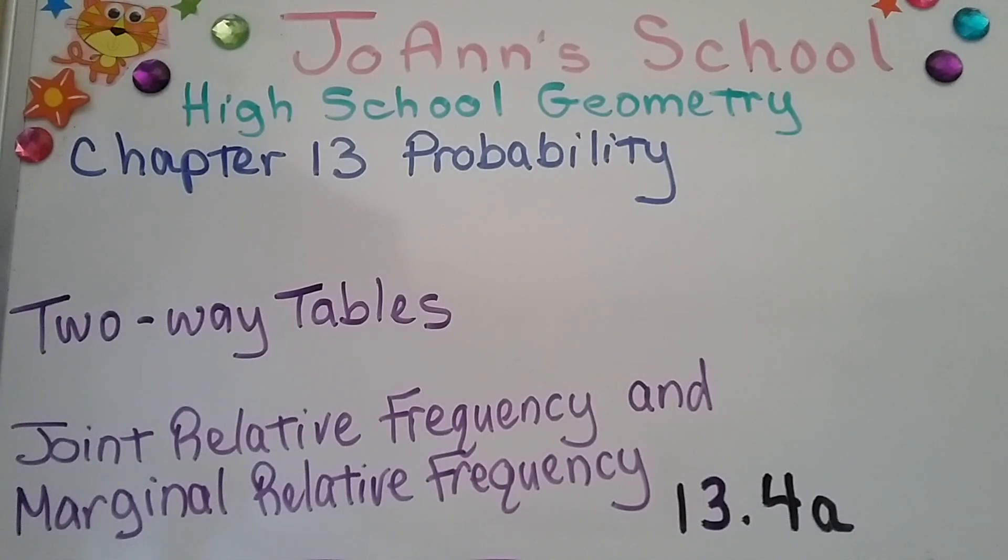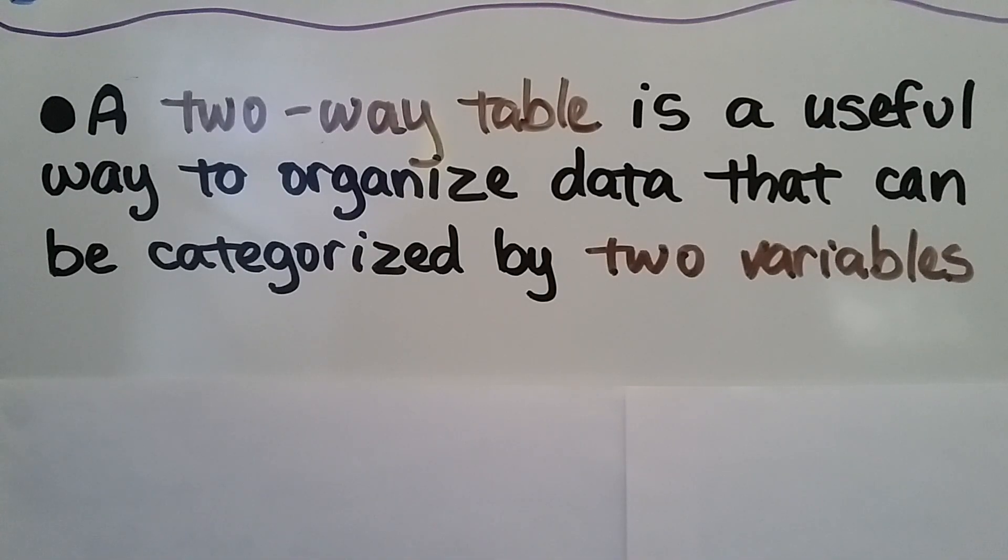Now we're going to talk about two-way tables. We're at 13.4a and we're going to discuss joint relative frequency and marginal relative frequency. A two-way table is a useful way to organize data that can be categorized by two variables.